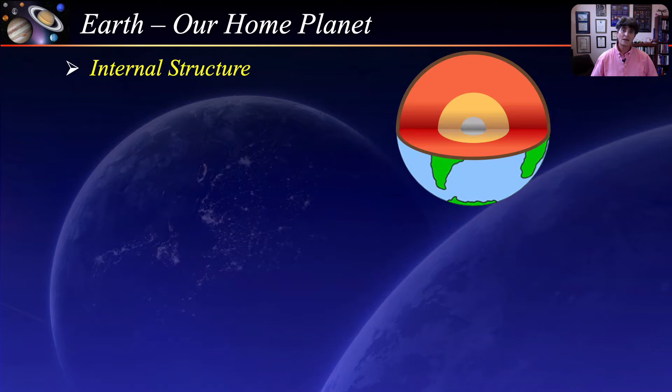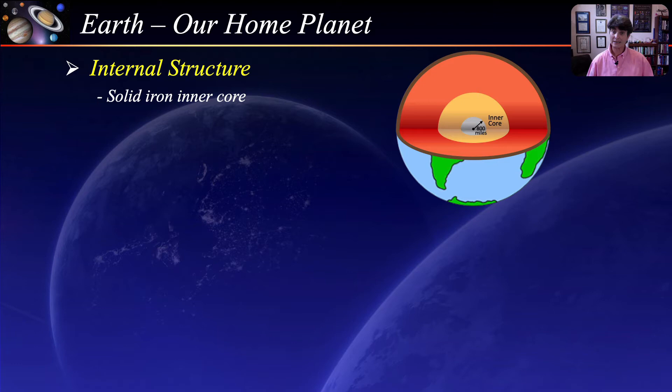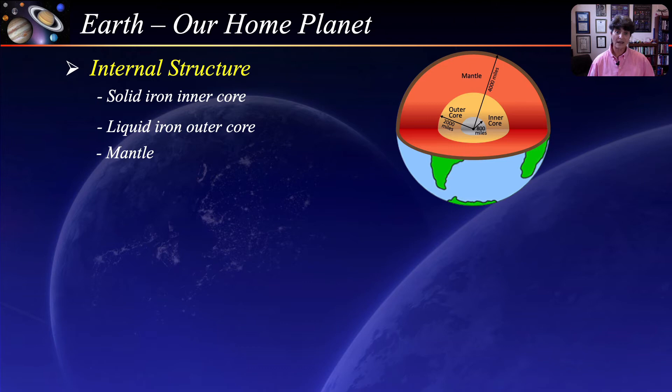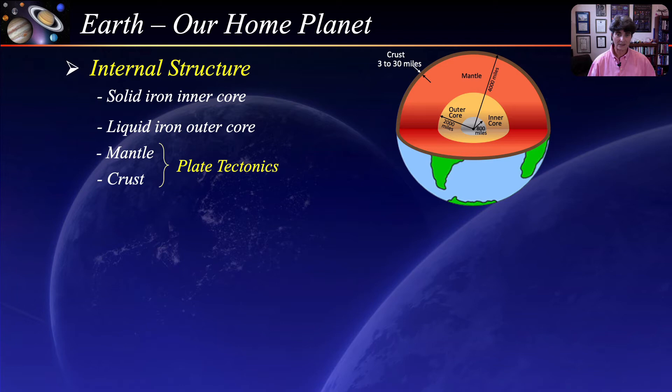The way we learn about the internal structure of the Earth is by studying seismic waves. At the center, we have a solid iron inner core surrounded by a liquid iron outer core, and the partially molten semi-solid rock mantle surrounds the core. A very thin crust floats on the mantle. The movement of the crust over the mantle gives rise to plate tectonics, which continues to mold the surface of the Earth, giving rise to continental drifts, seafloor spreading, volcanic activity, and mountain formation.